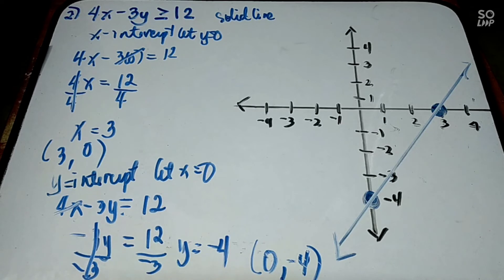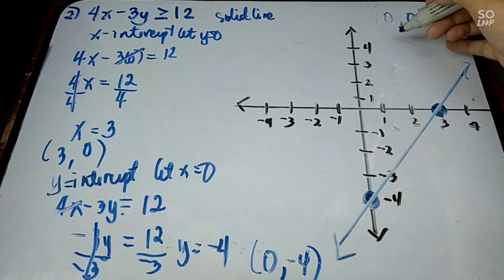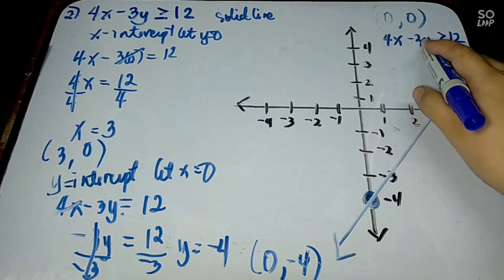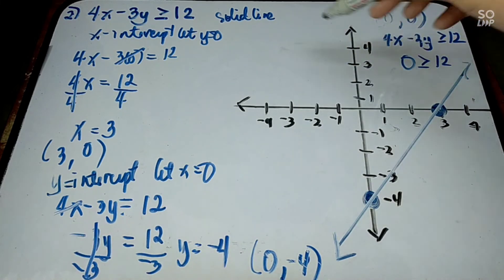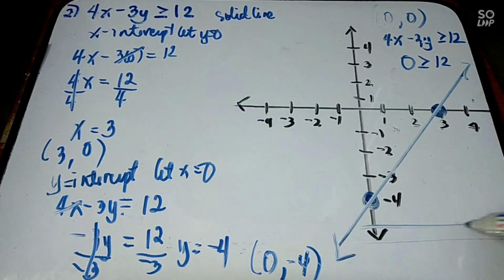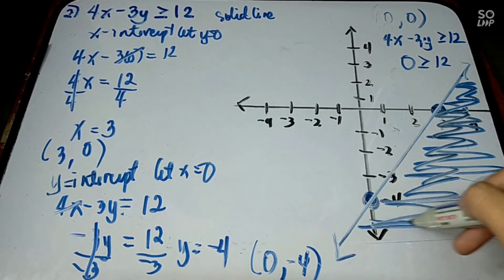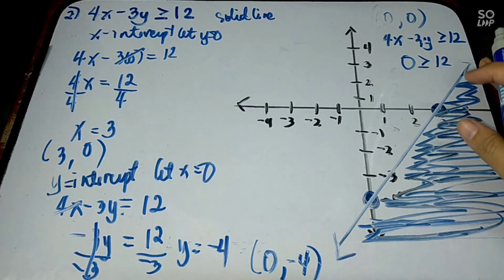Now test the origin (0, 0): 4x minus 3y greater than or equal to 12 — substituting gives 0 minus 0, which is 0 greater than or equal to 12. Is 0 greater than or equal to 12? No, that is false. Since the origin is false, the solution region is on the other side of the line — the right side. All points in that shaded region satisfy 4x minus 3y greater than or equal to 12.